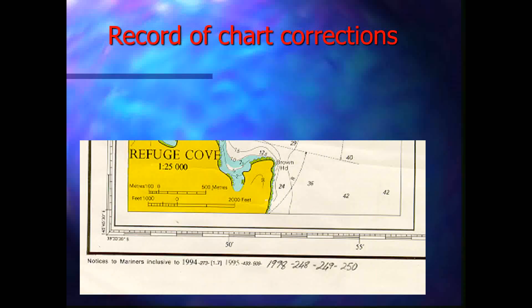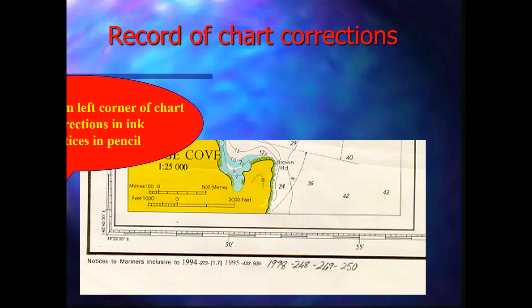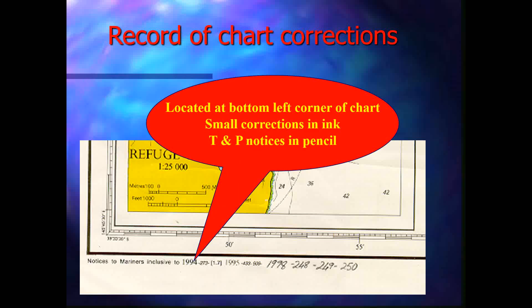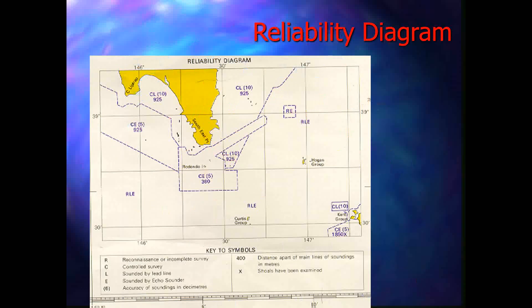The record of chart corrections is located at the bottom left-hand corner of the chart. Small corrections are in ink, and T&P notices — temporary and permanent notices — are in pencil. If you are the officer in charge of correcting paper charts, you should record the latest chart correction number and year. The chart should be kept updated so that any new officer joining the vessel can find out to what correction the chart has been corrected, ensuring it is safe for navigational use.